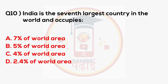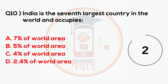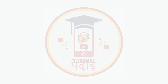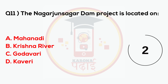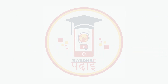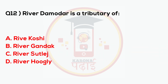India is the 7th largest country in the world and occupies 2.4% of world area. The Nagarjuna Sagar Dam project is located on the Krishna River. River Damodar is a tributary of —.